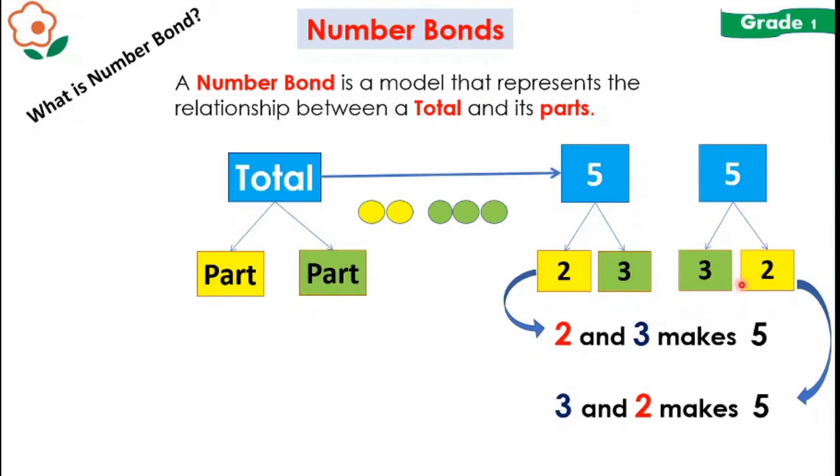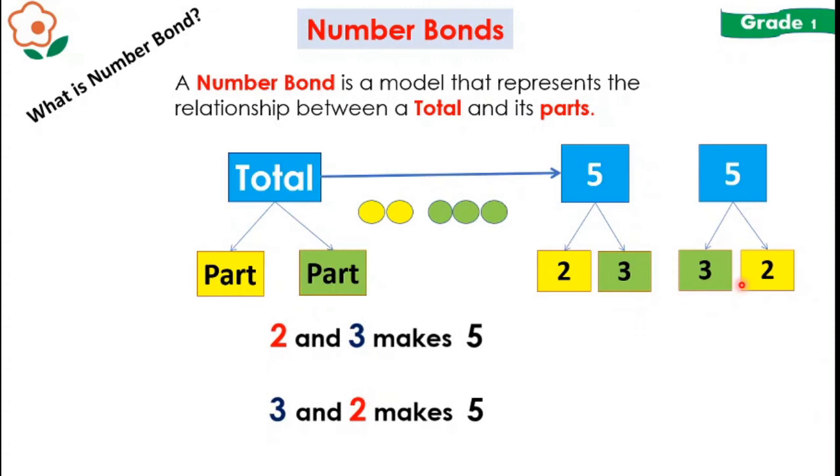Now, how can we write to represent what we just did? We are putting things together, combining them, adding them together to make a total. So we could write it as 2 plus 3 is equal to 5 and 3 plus 2 is equal to 5. Notice we have two different equations but they have the same results. They both are equal to each other. They have technically the same meaning.